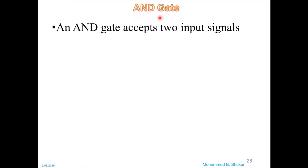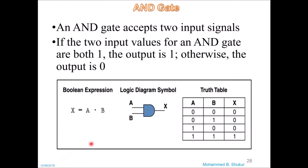Here we have the AND gate. An AND gate accepts two input signals. This is the shape of the AND gate — it contains two inputs A and B and one output. The Boolean expression is X equals A AND B. In an AND gate, if any of the inputs is 0, the output X will be 0. For example, 0-0 gives output 0, 0-1 gives output 0, and when B equals 0, X equals 0. But when both inputs are logic 1, the output will be logic 1.